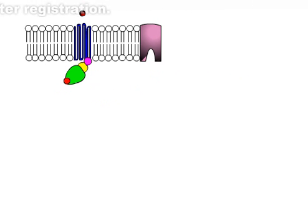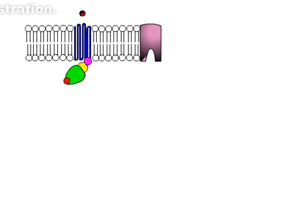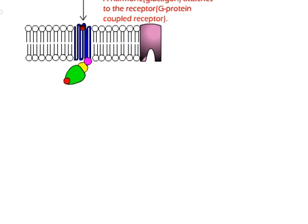And now here comes the hormone. In this case it is the glucagon hormone which attaches to the receptor. This causes the activation of the G-protein.